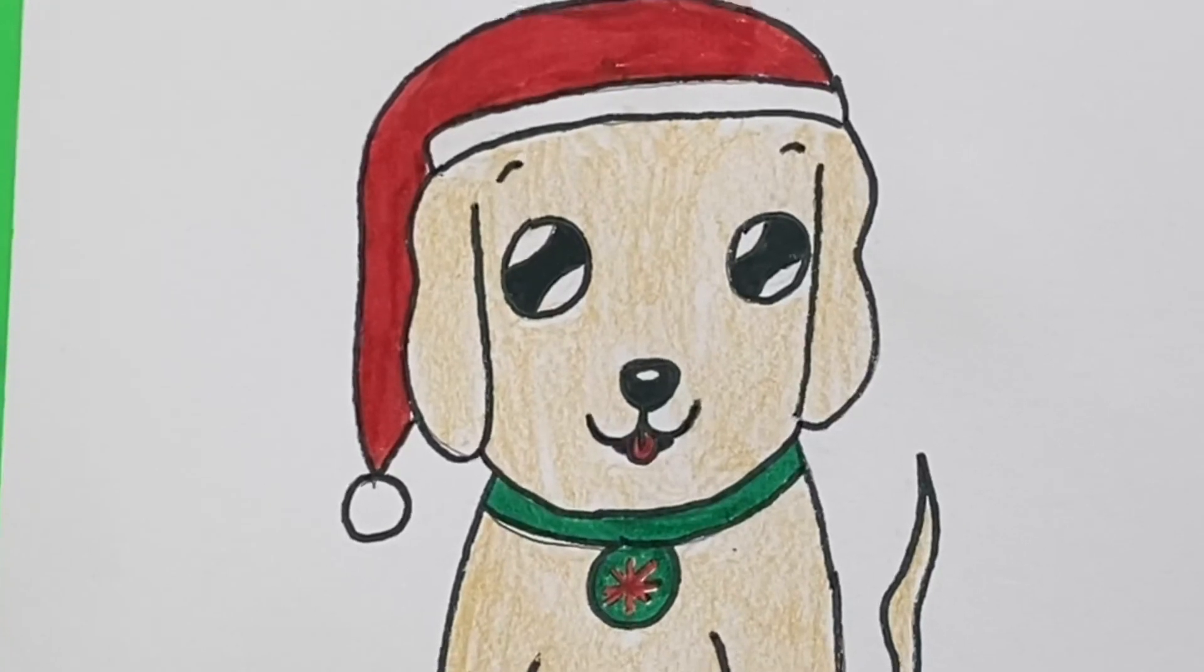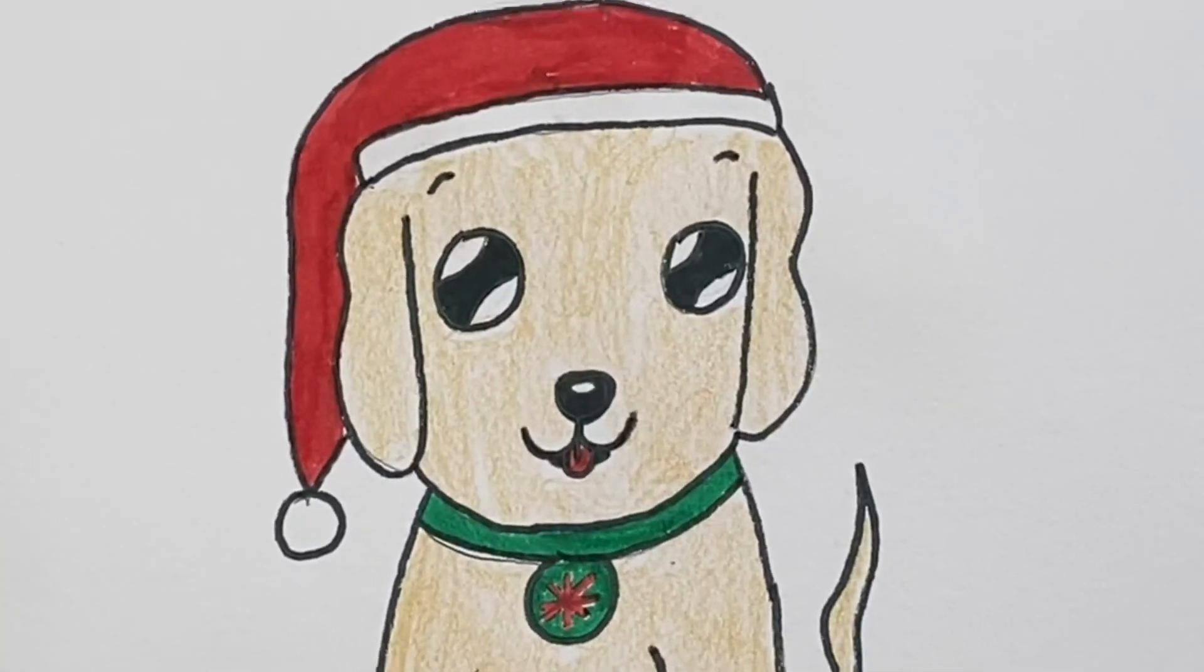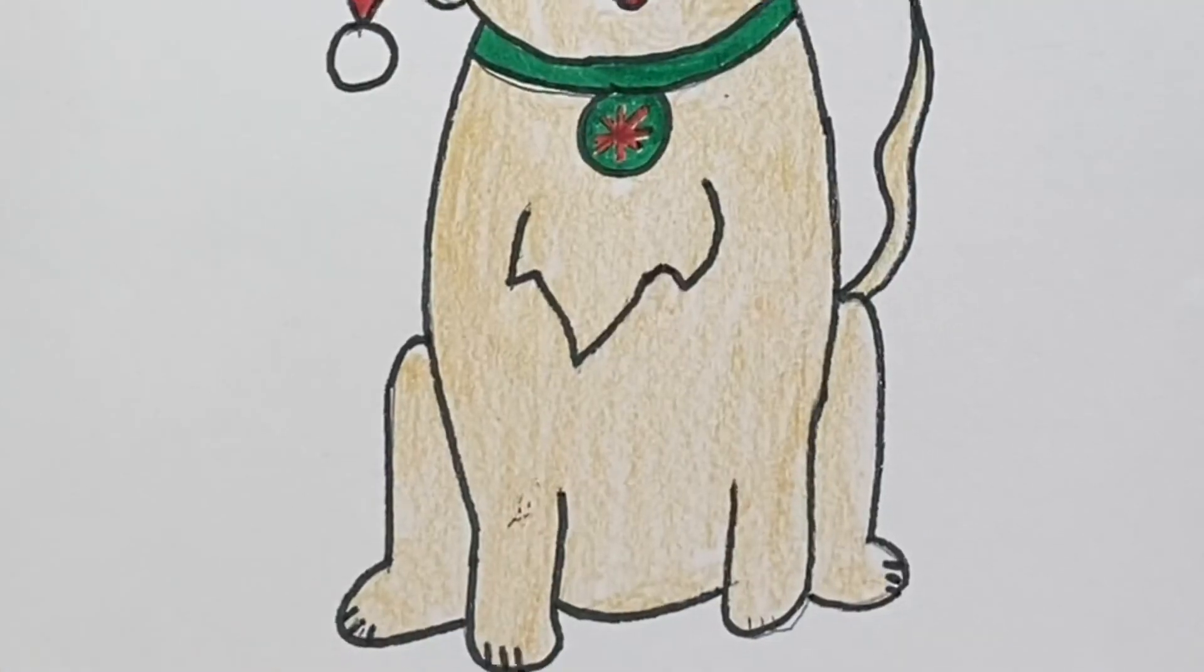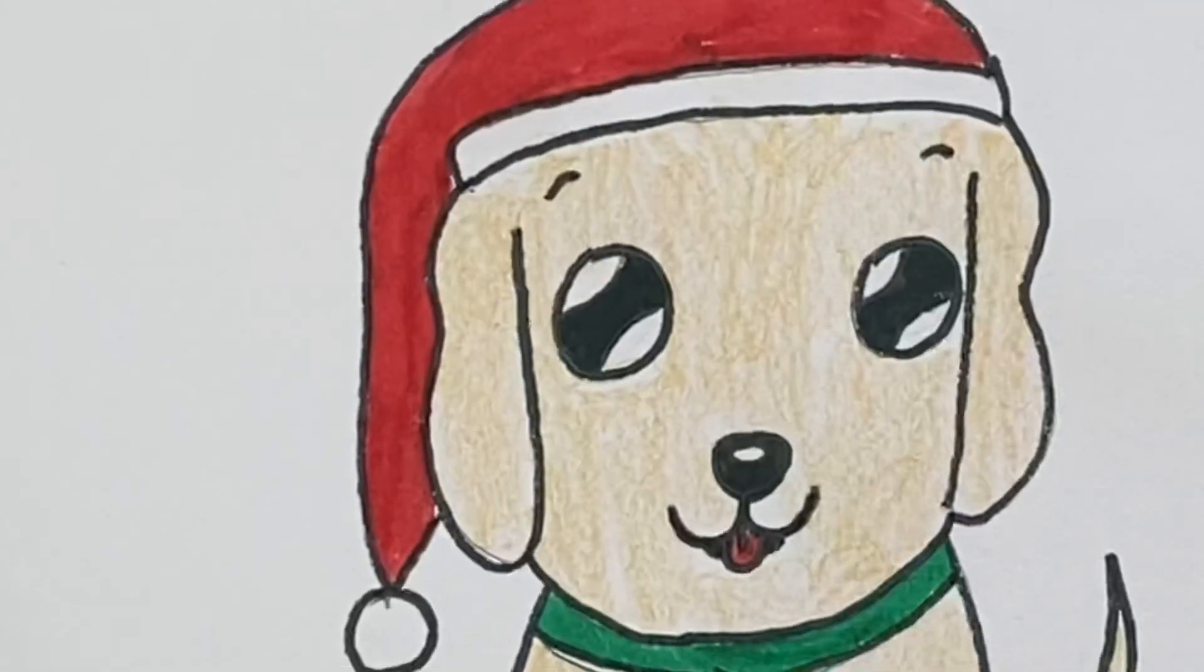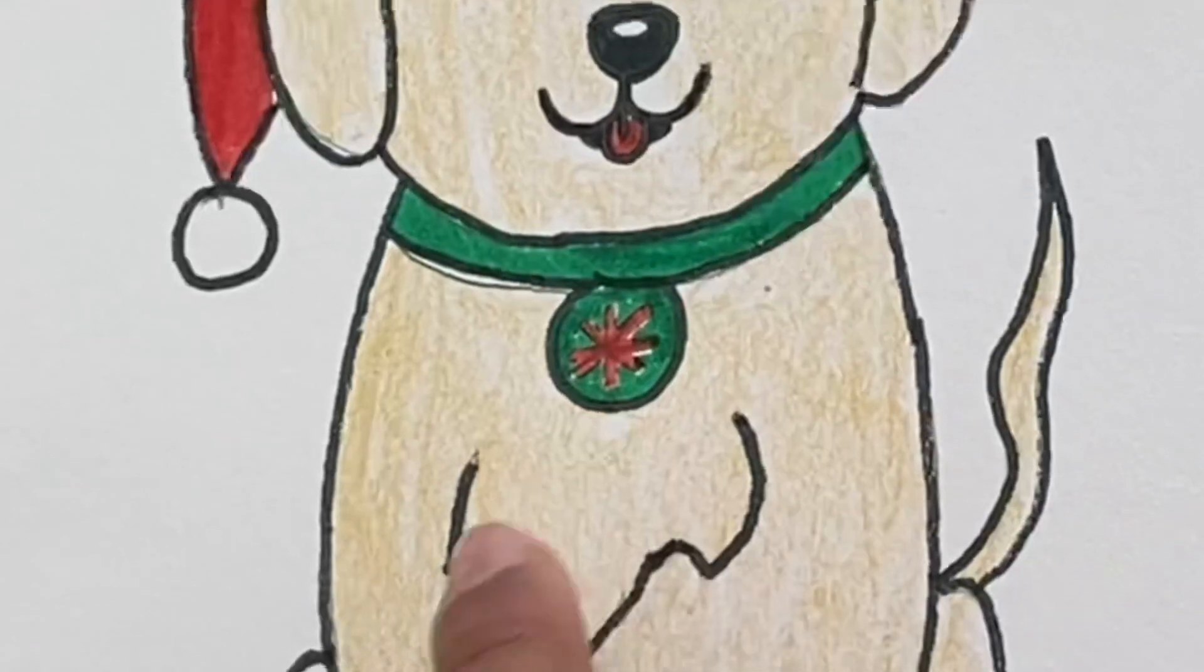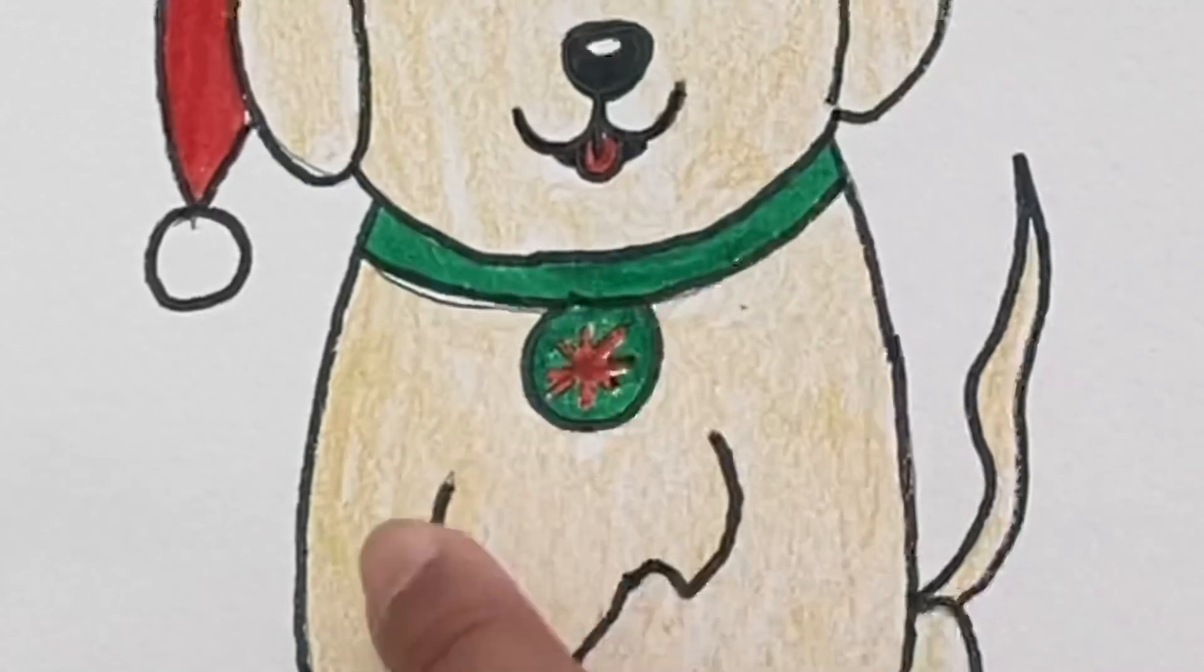Guys, I'm done coloring my Christmas puppy now. So I just did the fur like a golden kind of color. And then the Santa hat is red. And then the collar is green. And the little snowflake inside is red, too.